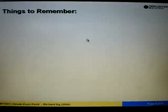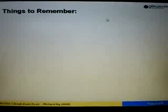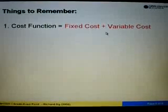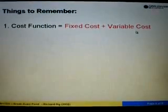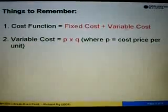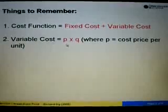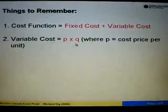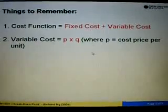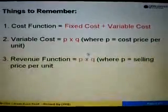Some things to remember before we attempt any questions on this topic. Number 1: the cost function is equal to fixed cost plus variable cost, where variable cost is equal to P times Q, and P represents the cost price per unit.